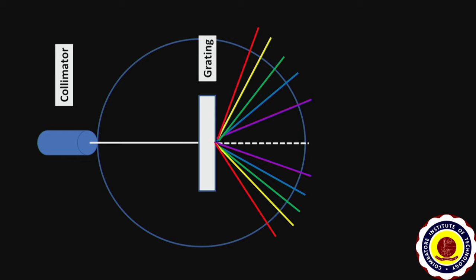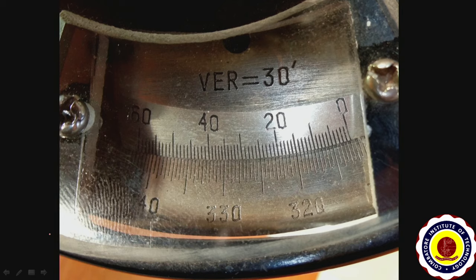Now I am going to explain how to record diffraction angles for different spectral lines. Let us consider the violet spectrum as an example. Place the vertical crosswire over the left side of the violet spectral line and note down the vernier A reading — the main scale reading and vernier scale coincidence. In this scale, the main scale reading is 312 degrees 30 minutes, and the vernier scale coincidence is 5, meaning the 5th division of the vernier scale is exactly coinciding with the main scale.